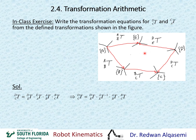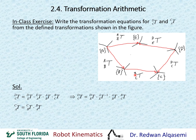Now to find T of A relative to C using the short route, going from C to B to A: T of A relative to C equals T of B relative to C times T of A relative to B. I don't have T of B relative to C, so I invert T of C relative to B. I also don't have T of A relative to B, so I invert T of B relative to A. Therefore, T of A relative to C equals T of C relative to B inverse, times T of B relative to A inverse.